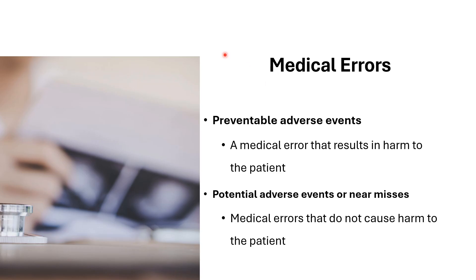There are two types of medical errors. First, preventable adverse events — a medical error that results in harm to the patient. For example, giving amoxicillin to a patient who is allergic to penicillin. Second, potential adverse events or near-misses — a medical error that does not cause harm to the patient. For example, giving 6 ml of amoxicillin instead of 5 with no adverse effects after taking the extra ml.